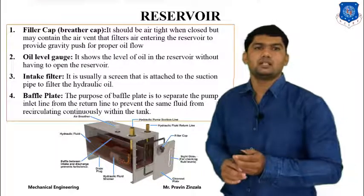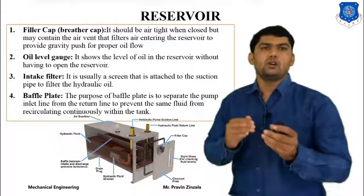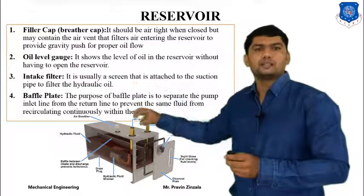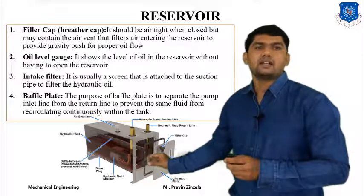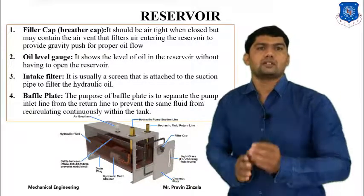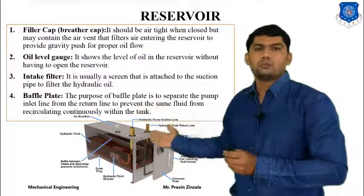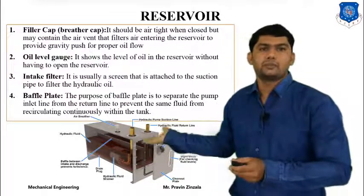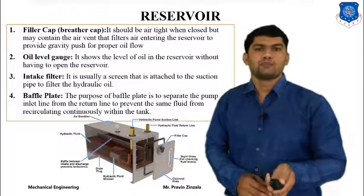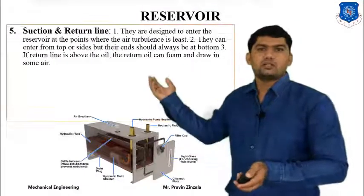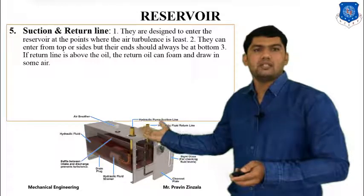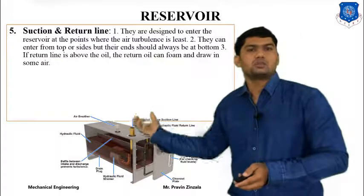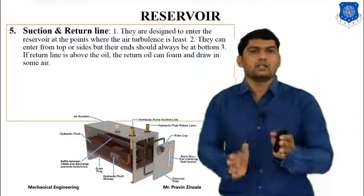The fourth component is the baffle plate. During continuous operation of the hydraulic system, there are chances of mixing of the inlet and outlet fluids. The remaining fluid in the reservoir is at normal temperature, but fluid returning from the system is heated or at higher temperature. The baffle plate separates the inlet and outlet fluid, allowing us to maintain different temperatures for inlet and outlet. The suction line supplies fluid to the pump and then to the different components, while the return line allows fluid from the system back to the reservoir, with both separated by the baffle plate.